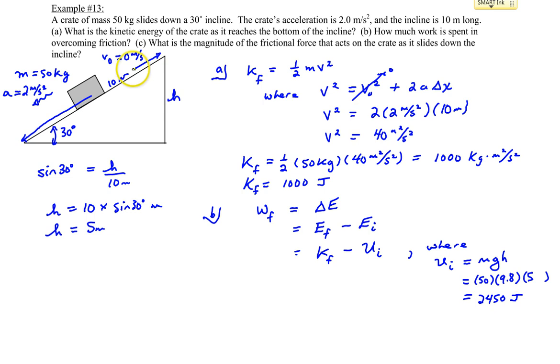you're going to get an answer of 2,450 joules. So at the top of the ramp, you started off with 2,450 joules. But at the bottom of the ramp, you only had 1,000 joules of energy.